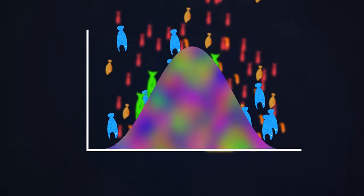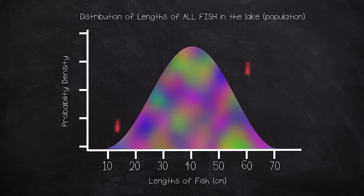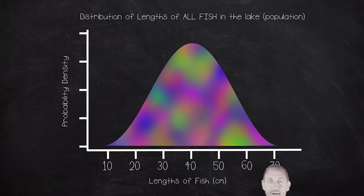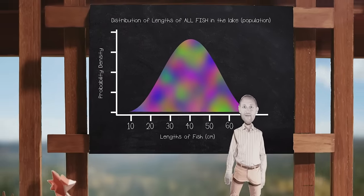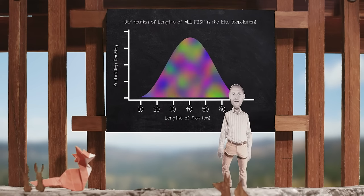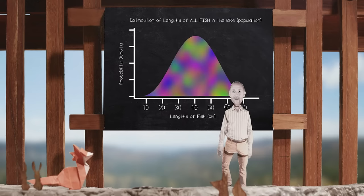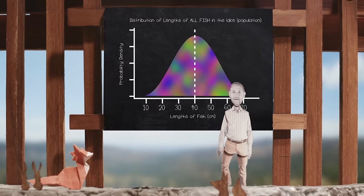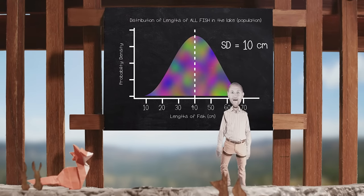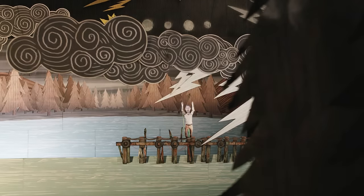So we now know the mean length and the standard deviation of the length. And this probability distribution shows the length of all fish in this lake. Every. Single. Fish. So we know that this population has a mean length of 40 centimeters and a standard deviation of 10 centimeters. Thanks for your help, Neptune!